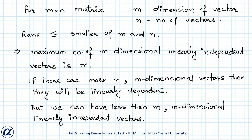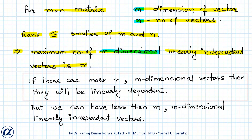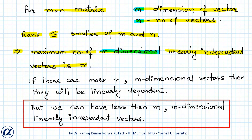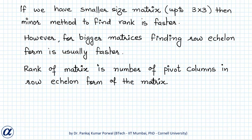One important point: for an m×n matrix where m is the dimension of each vector and n is the number of vectors, the rank will always be less than or equal to the smaller of m and n. This means the maximum number of linearly independent m-dimensional vectors is m — we cannot have more than m linearly independent vectors among m-dimensional vectors, though we can have fewer.